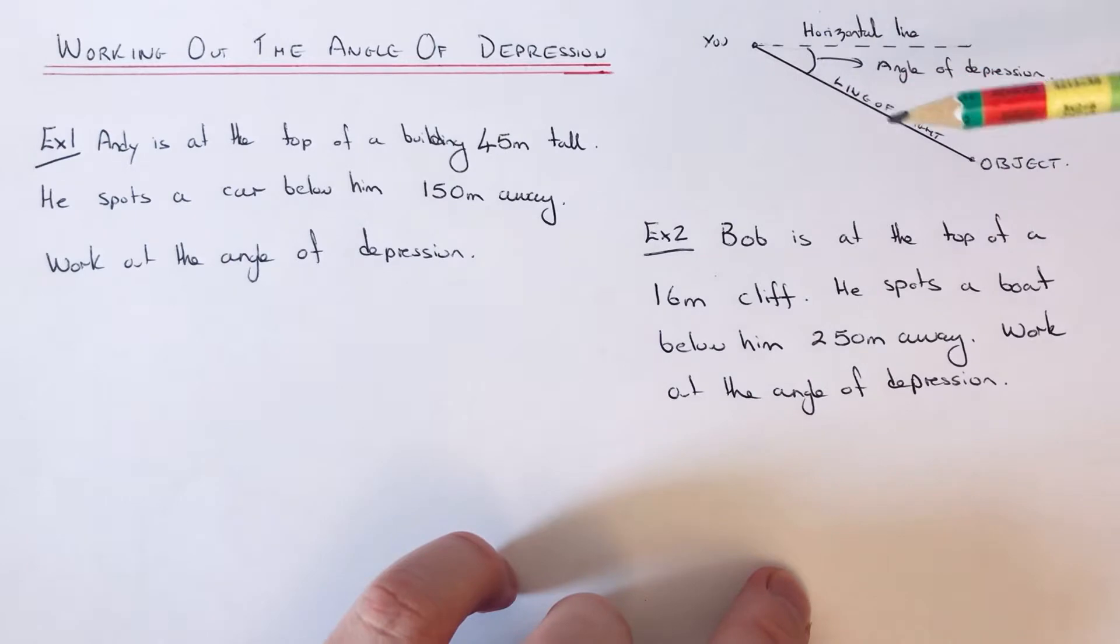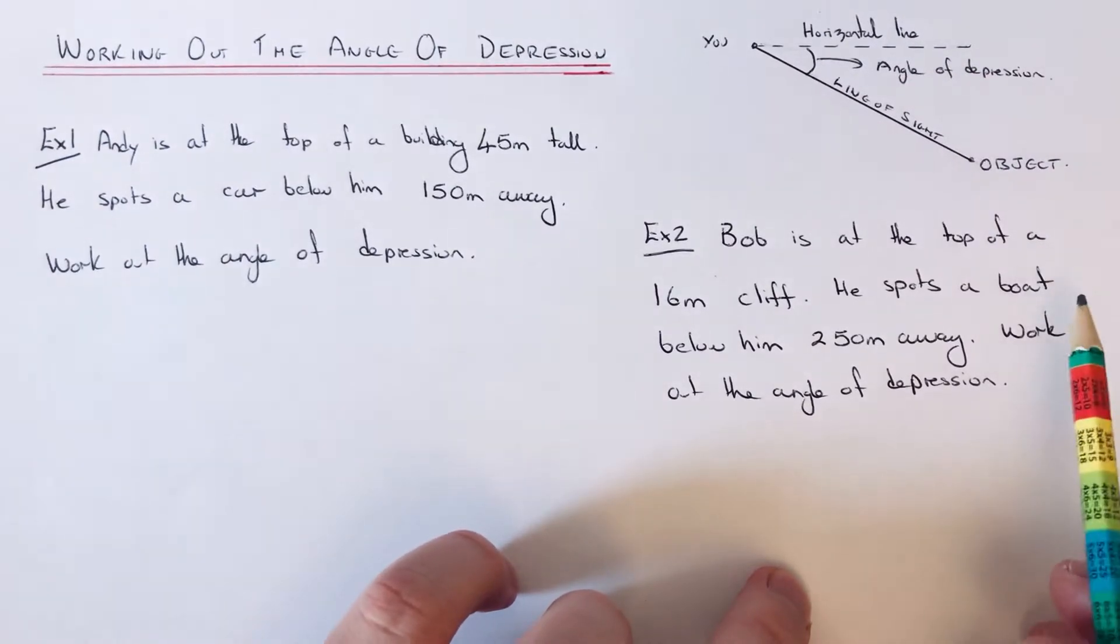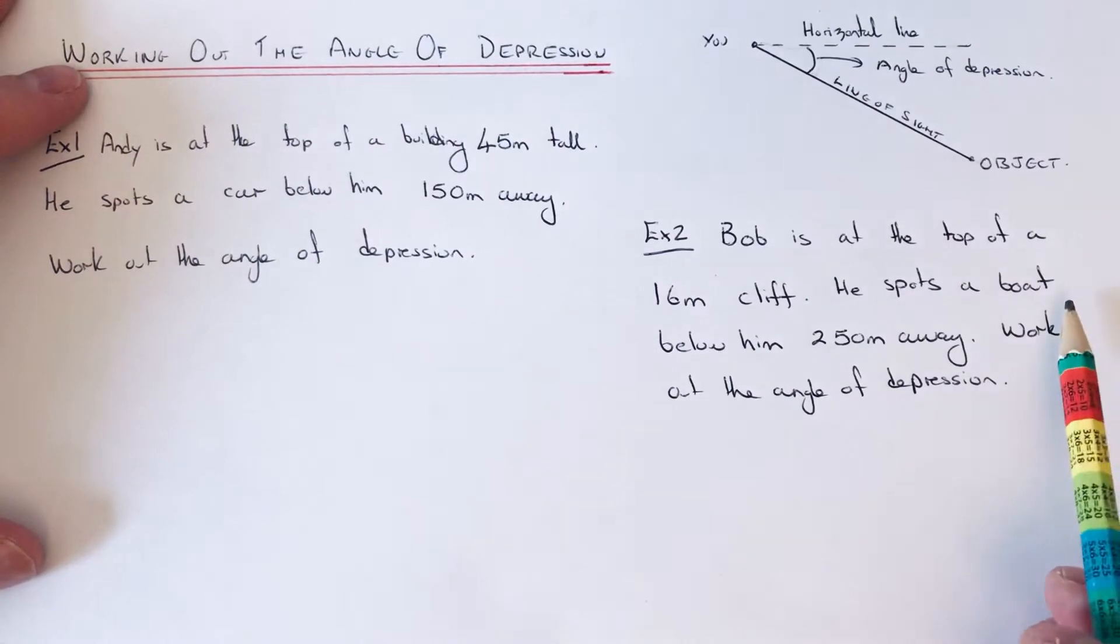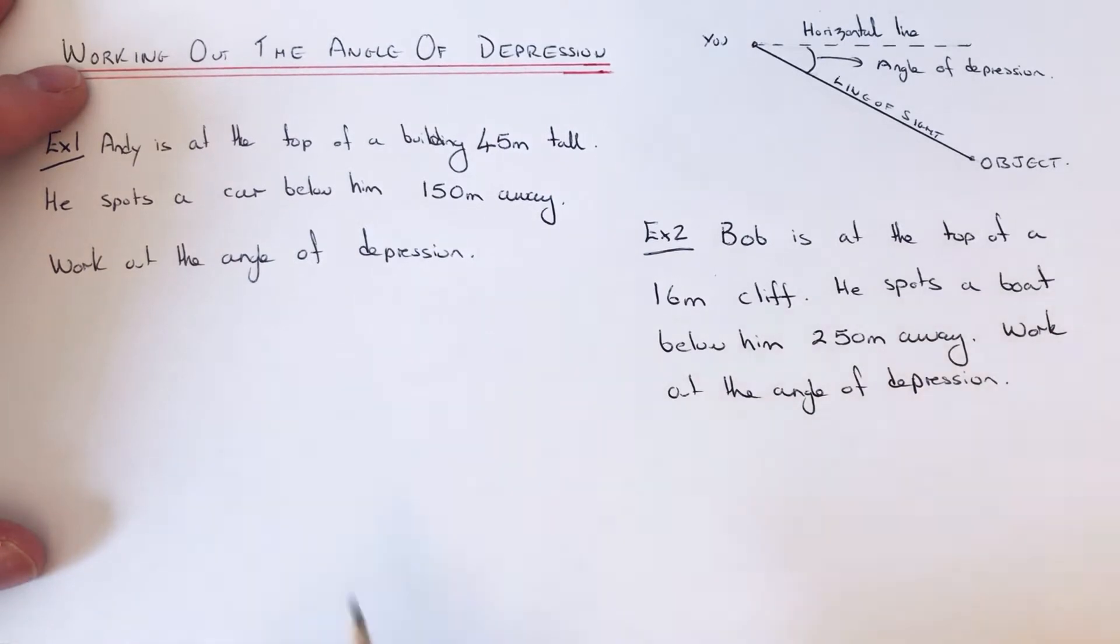So let's have a look at the two examples here. Andy is at the top of a building 45 metres tall. He spots a car below him 150 metres away. Work out the angle of depression. So the key to this question is to draw yourself a good diagram.